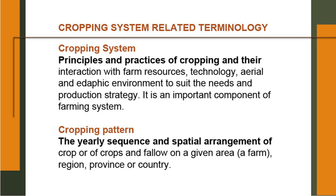Some cropping system-related terminology: what is a cropping system? It is the principles and practices of cropping and their interaction with farm resources, technology, and aerial and edaphic environment to suit the needs and production strategy. It is an important component of farming system. Cropping pattern: the yearly sequence and spatial arrangement of crops or of crops and fallow on a given area — a farm region, province or a country. Cropping pattern is at a very large scale; cropping system is for a small region.